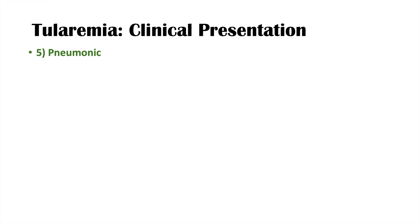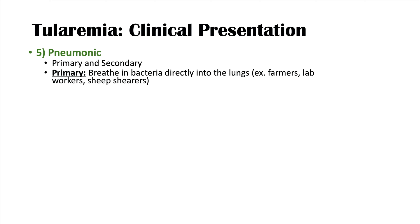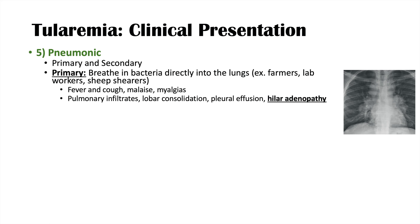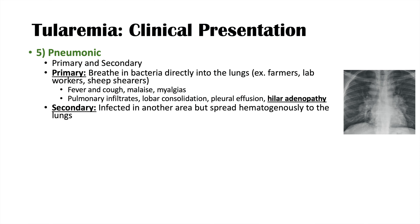The fifth presentation is pneumonic tularemia, which has primary and secondary forms. Primary pneumonic tularemia occurs when bacteria are breathed directly into the lungs, seen in farmers, lab workers, and sheep shearers. Patients can have fever, cough, malaise, and myalgia. A chest x-ray may show pulmonary infiltrates, lobar consolidation, pleural effusion, and bilateral hilar adenopathy — which may look like sarcoidosis. Secondary pneumonic tularemia occurs when bacteria spread hematogenously from another infected site into the lungs, typically causing bilateral lower lobe involvement.